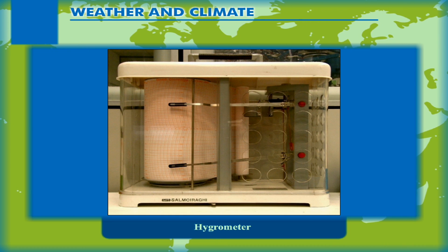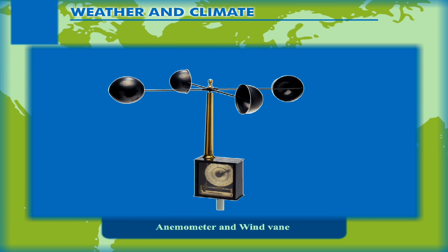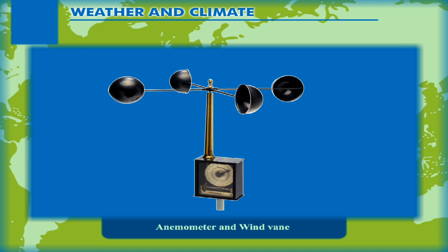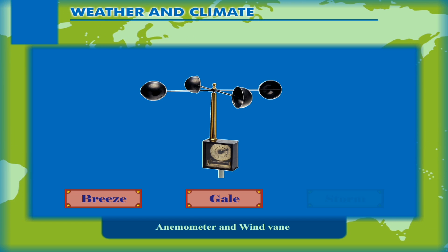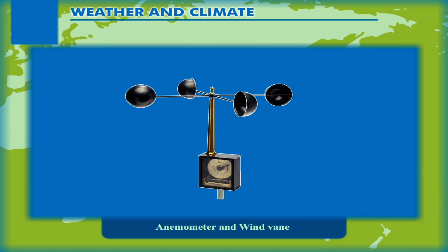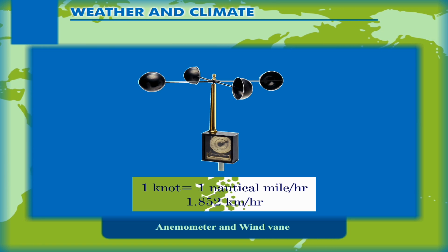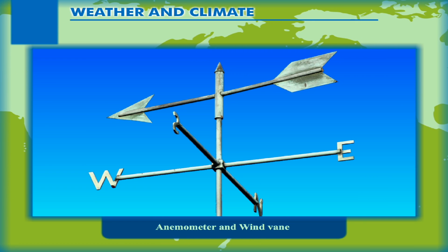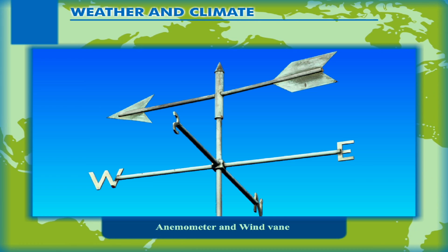A hygrograph is a self-registering instrument used to measure humidity. Anemometer and wind vane. The speed of wind is measured using an anemometer. Wind speed is measured in knots or nautical miles per hour. One knot is equal to one nautical mile per hour or 1.852 km per hour. The wind vane moves in the direction of the wind flow and the arrow attached to it shows the direction of the wind's movement.